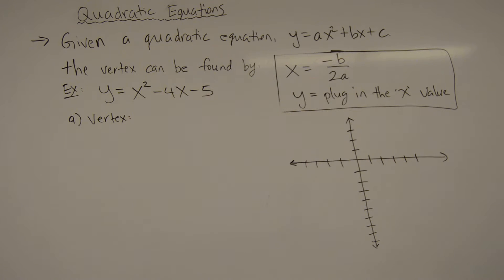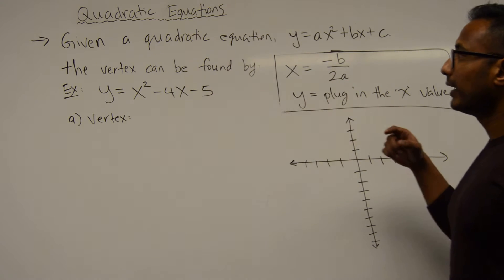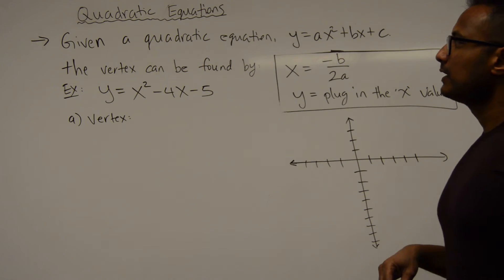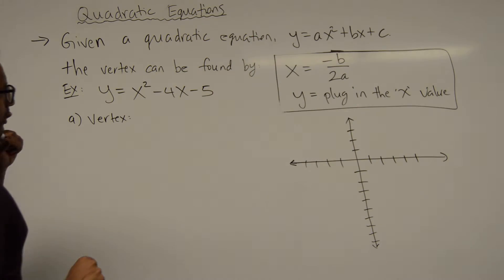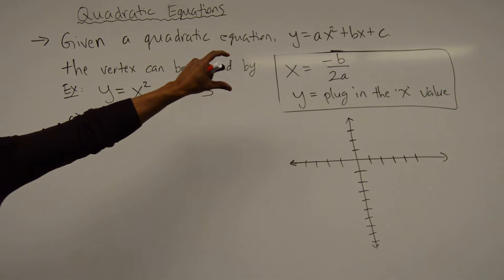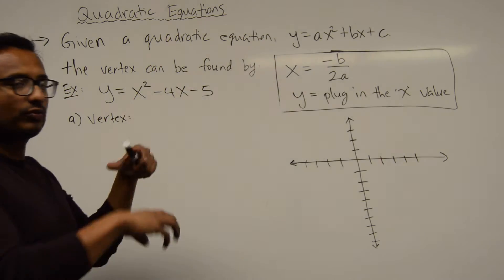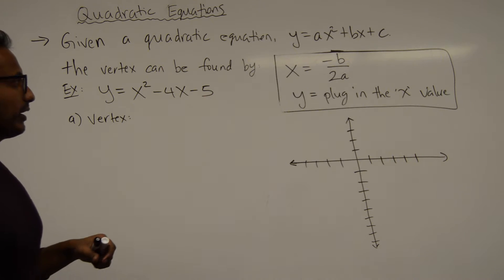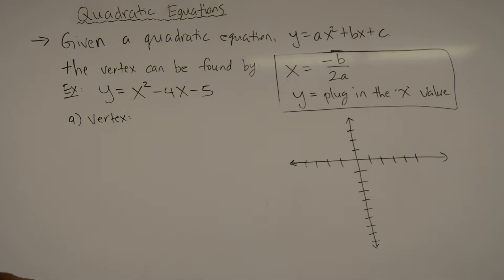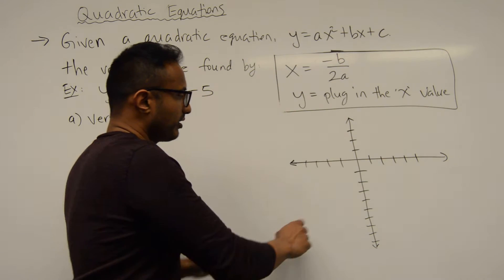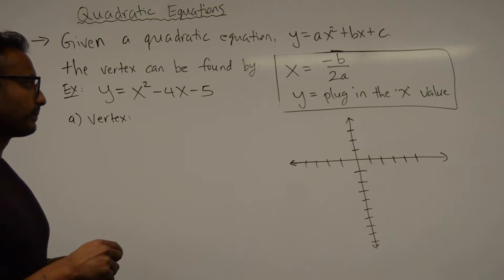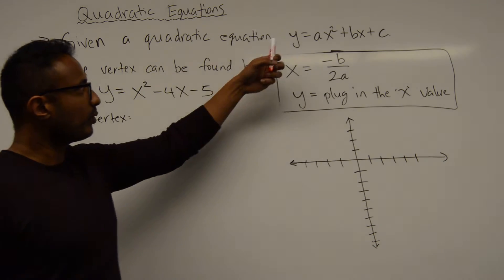In this section we are going to continue talking about quadratic equations, but we're going to talk about different aspects than the ones we covered in unit two. The main thing we're going to talk about is the vertex of a quadratic function and how that relates to the overall graph. Let's worry about how to find the vertex if you have a quadratic equation in the form y = ax² + bx + c.